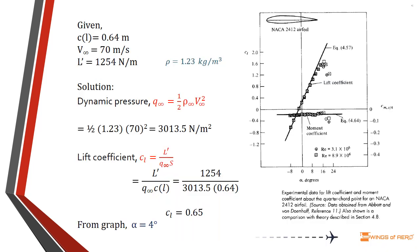Given: NACA 2412 airfoil, chord c = 0.64 meter, freestream velocity V∞ = 70 meter per second, lift per unit span L' = 1254 newton per meter. The question is: what is the angle of attack?